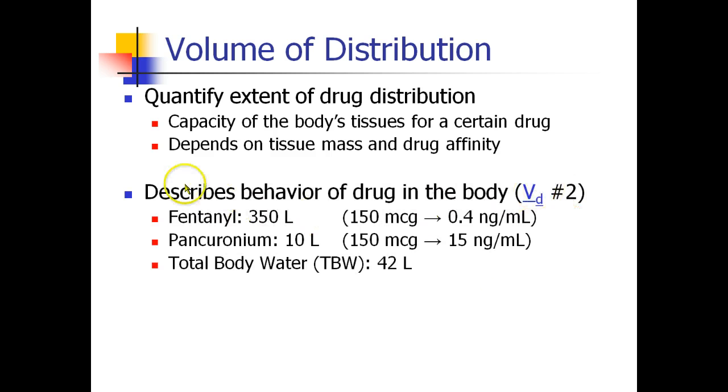For example, what we're really doing is describing the behavior of the drug in the body. Let's take a drug like fentanyl. If I inject 150 micrograms of fentanyl into someone and wait for a few minutes and then take a sample of their blood, I'll find a fentanyl concentration of about 0.4 nanograms per milliliter. We all know that concentration is mass divided by volume. So 150 micrograms divided by what volume makes a concentration of 0.4 nanograms per milliliter? It turns out to be 350 liters. That's the volume of distribution of fentanyl.